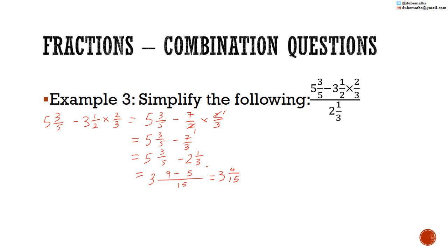Now we take the numerator and divide it by the denominator. So we have 3 and 4 over 15 divided by 2 and 1 over 3. We change these mixed numbers to improper fractions: 3 multiplied by 15 is 45, plus 4 is 49. So 49 over 15. For the denominator: 2 multiplied by 3 is 6, plus 1 is 7, giving 7 over 3. That is the same as 49 over 15 multiplied by 3 over 7.